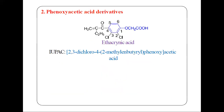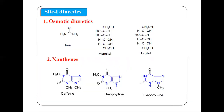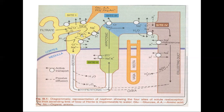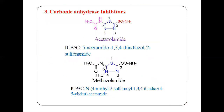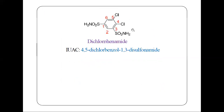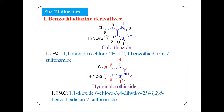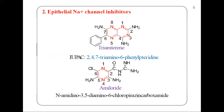So today we have covered the four classifications of diuretics — those acting on site 1, site 2, site 3, and site 4. In the next lecture, we will start with the synthetic part covering various derivatives in the syllabus — specifically the synthesis of acetazolamide, furosemide, and chlorothiazide. That is all for today's lecture. Thank you.